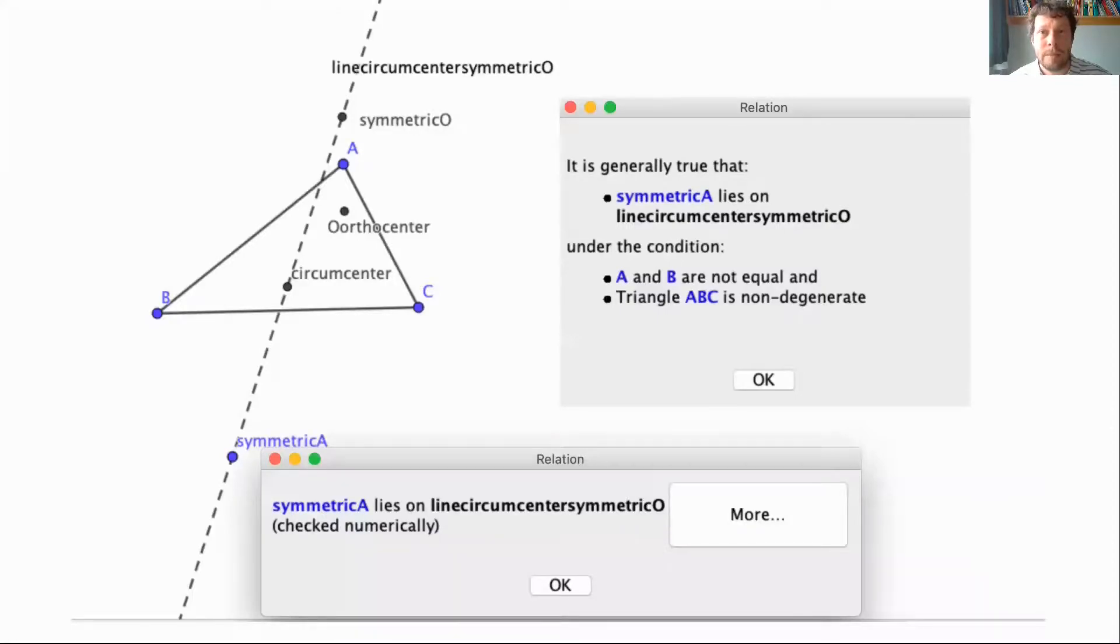One example as introduction: we have a triangle and construct the circumcenter and orthocenter, which is the intersection of heights. Then we create the symmetric of the orthocenter with respect to vertex A, and also the symmetric of vertex A with respect to the midpoint of the opposite side.